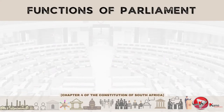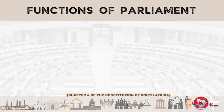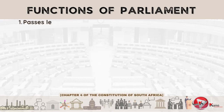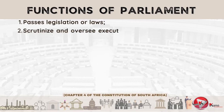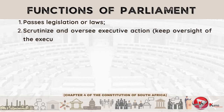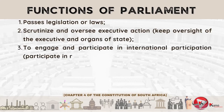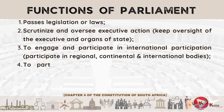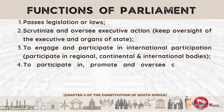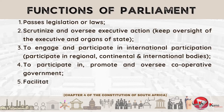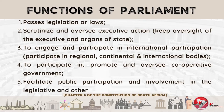The mandate of the South African Parliament is set out in the Constitution, which provides that Parliament will perform the following functions. Parliament is tasked with passing legislation or laws; scrutinizing and overseeing executive action by keeping oversight of the executive and organs of state; participating in international forums regionally, continentally, and internationally; participating in, promoting, and overseeing cooperation of government; and facilitating public participation and the involvement of the public in the legislative process and other processes of government.